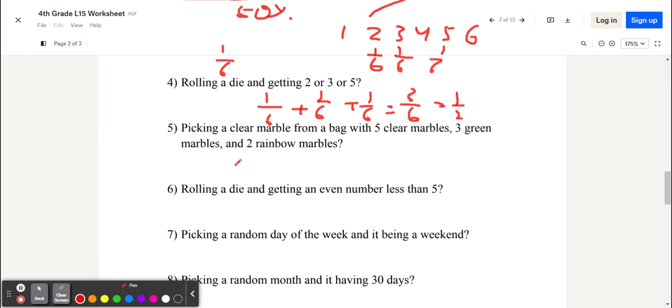And now, what is the probability of picking a clear marble from a bag with 5 clear marbles, 3 green marbles, and 2 rainbow marbles? There are 5 clear marbles, so we have 5 ways of picking them. In total, there are 5 plus 3 plus 2, which is 10 marbles. So, 5 out of the 10 will be clear. So, our probability is 5 over 10, which is the same as 1 half.